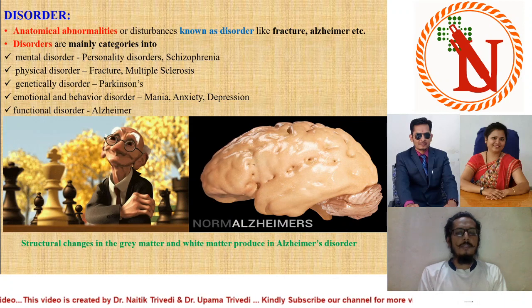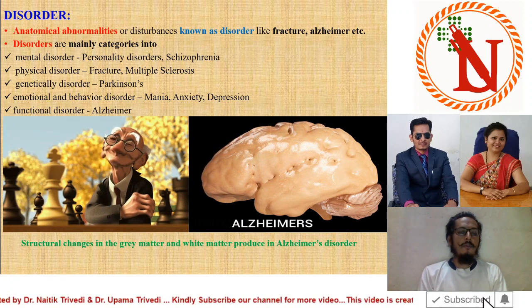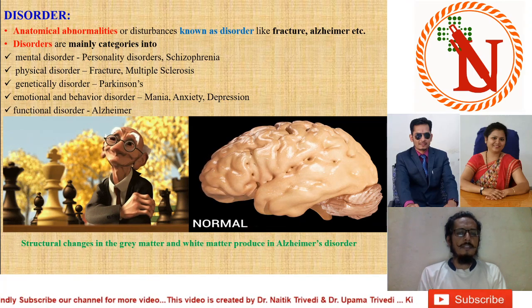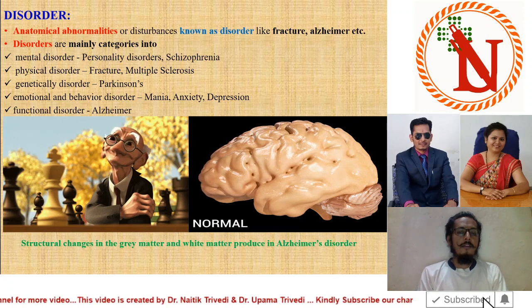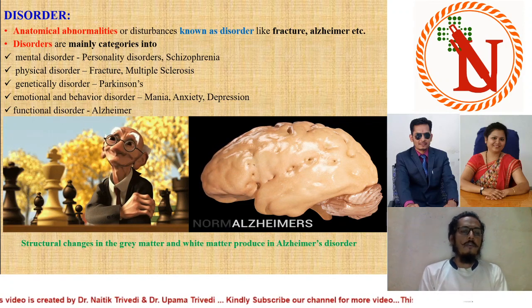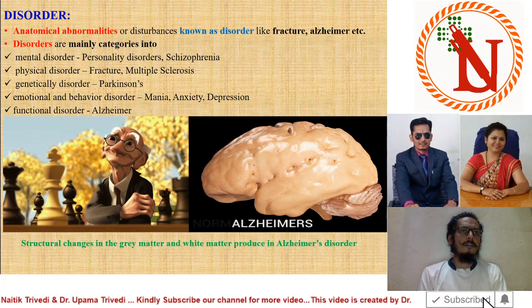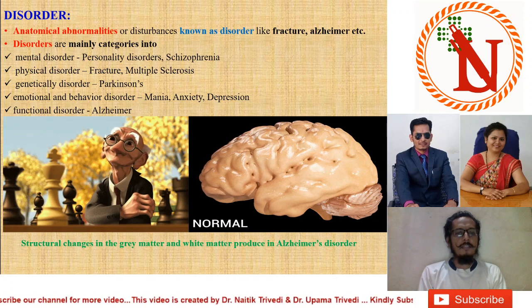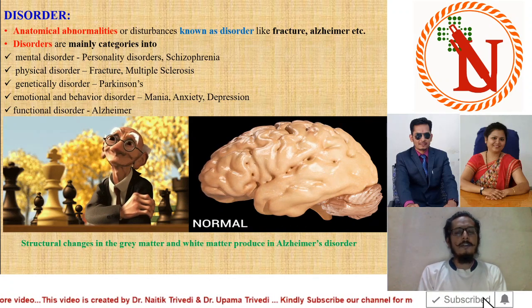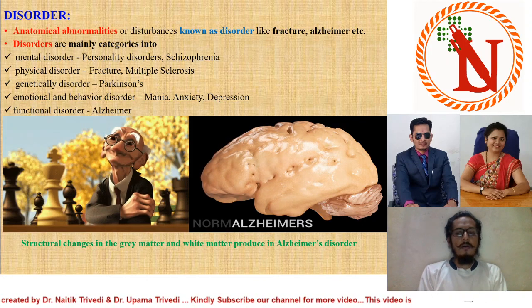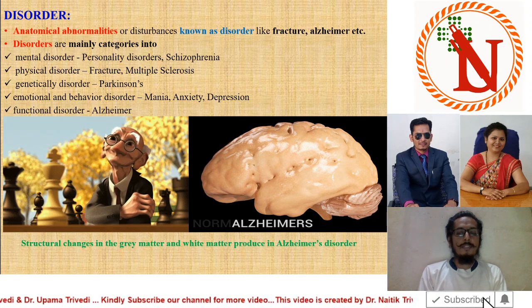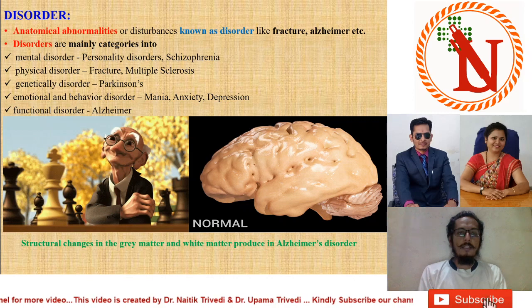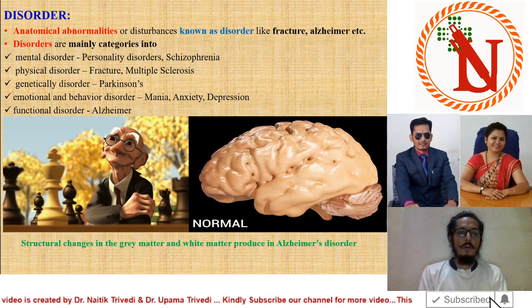To better understand, I have given two illustrations. The first picture shows an older gentleman who cannot recall what to do — people at older age sometimes lose their memory and do not give quick responses; it is a kind of memory loss. Alzheimer's is one kind of memory loss disease. In Alzheimer's, the brain's gray matter and white matter produce changes compared to a normal brain, producing anatomical abnormalities. That's why it is known as a disorder, not a disease.